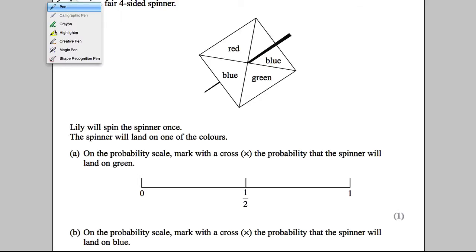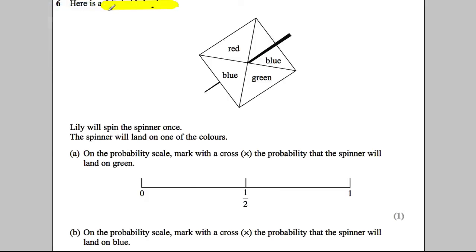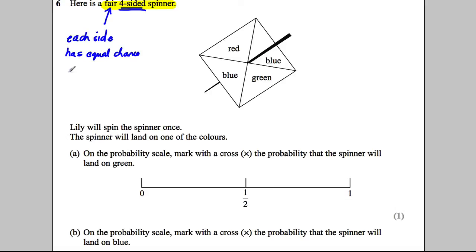Okay, question six. Let's get our highlighter out. Here is a fair four-sided spinner. Let's just remind ourselves what fair means. Fair, in reference to the four-sided spinner, means that each side has an equal chance of coming up, or landing on when you spin. So that's what fair means — each of the four chances are equal.